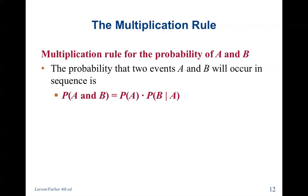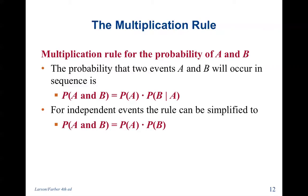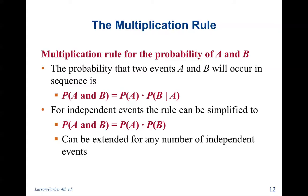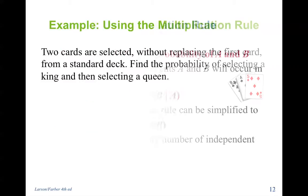Multiplication rule for the probability of A and B: the probability that two events A and B occur in sequence equals the probability of A times the probability of B given A. For independent events, this simplifies to the probability of A times the probability of B, and this can be extended for any number of independent events.